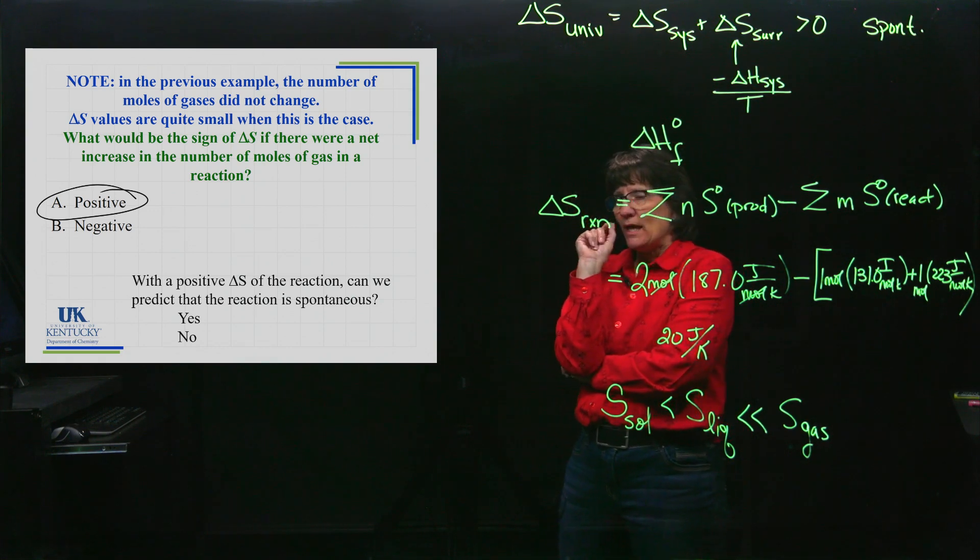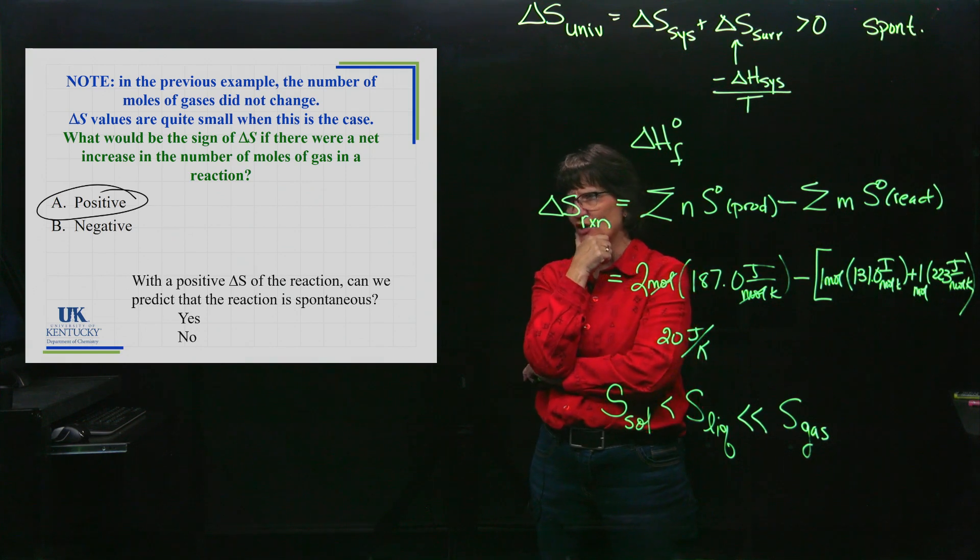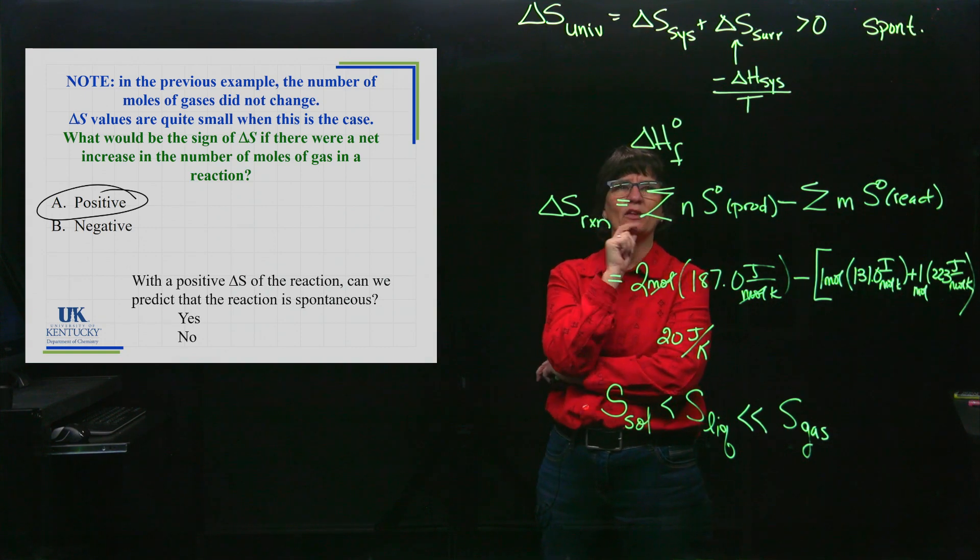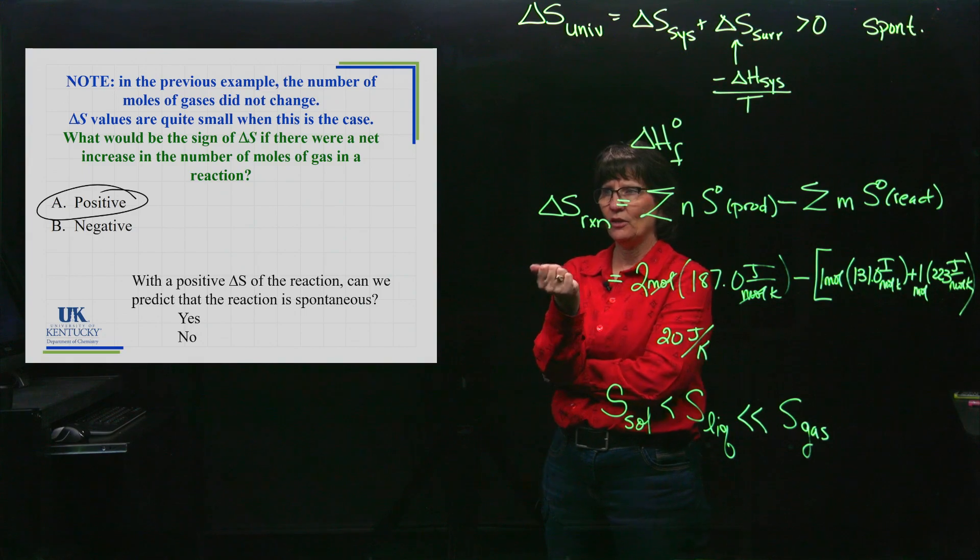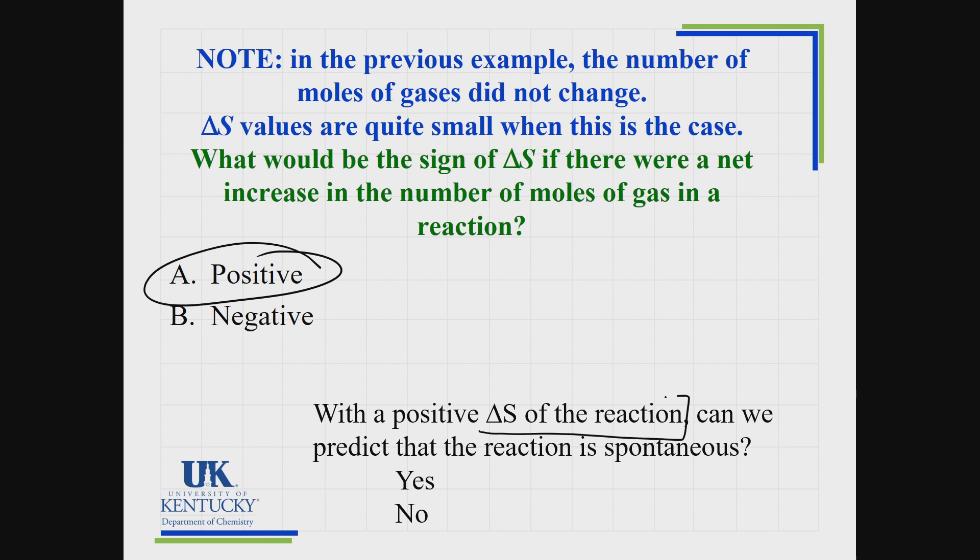Here's a question for you: if you have an increase in the moles of gas and that's going to give you a positive ΔS for the reaction, can we predict that the reaction is spontaneous? We catch people with this all the time. They say yes, you can, because a positive ΔS means spontaneous. But look - this is ΔS of the reaction. Is that our predictor of spontaneity? No.